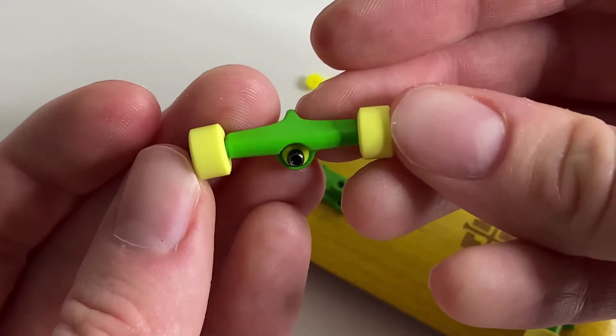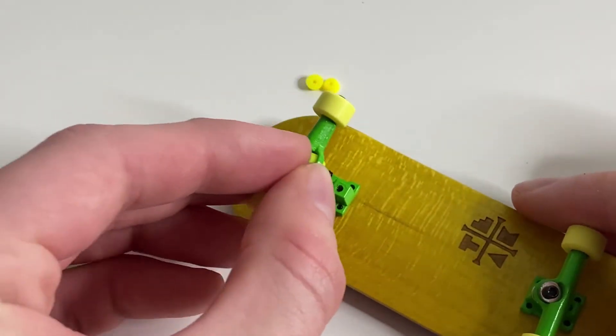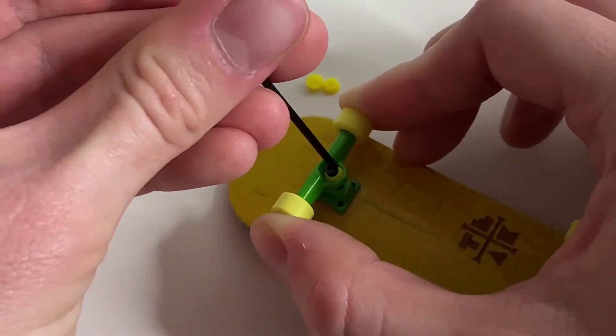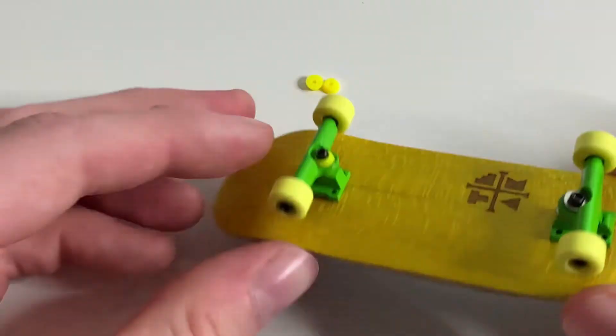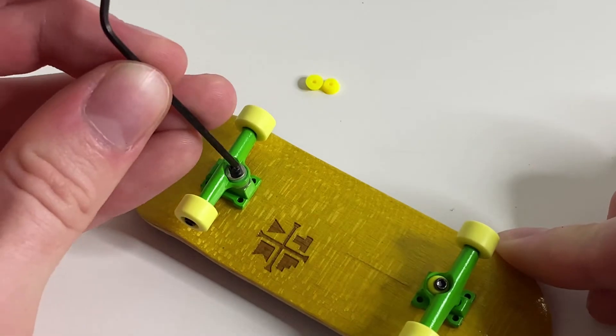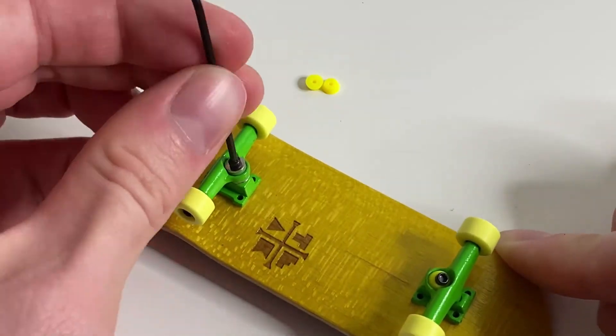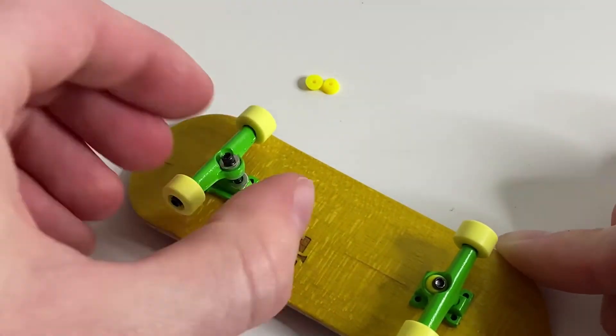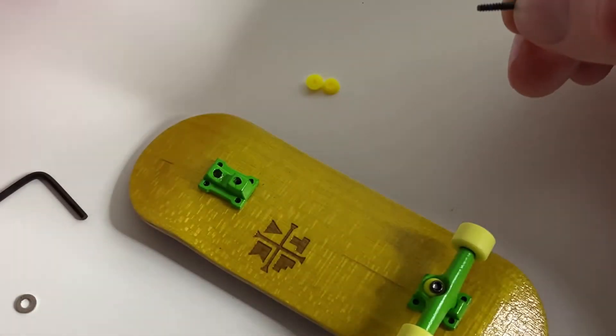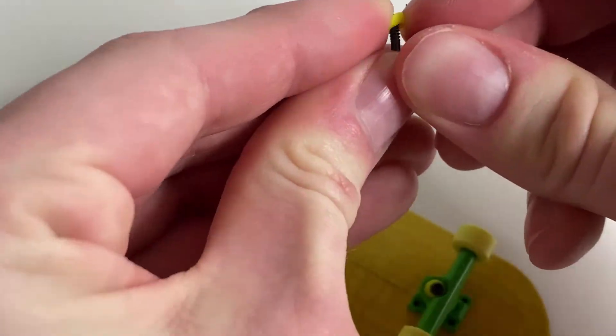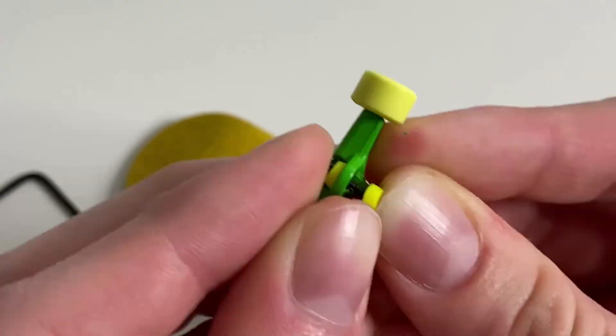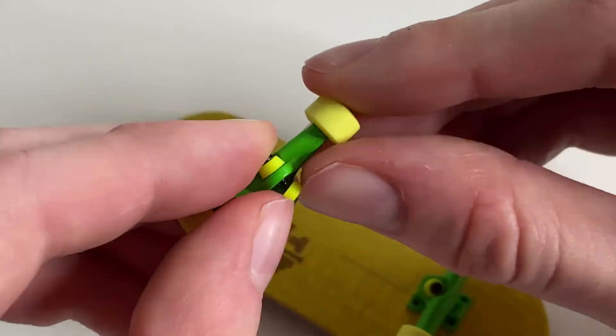Next, you're going to screw the kingpin back into the base plate.